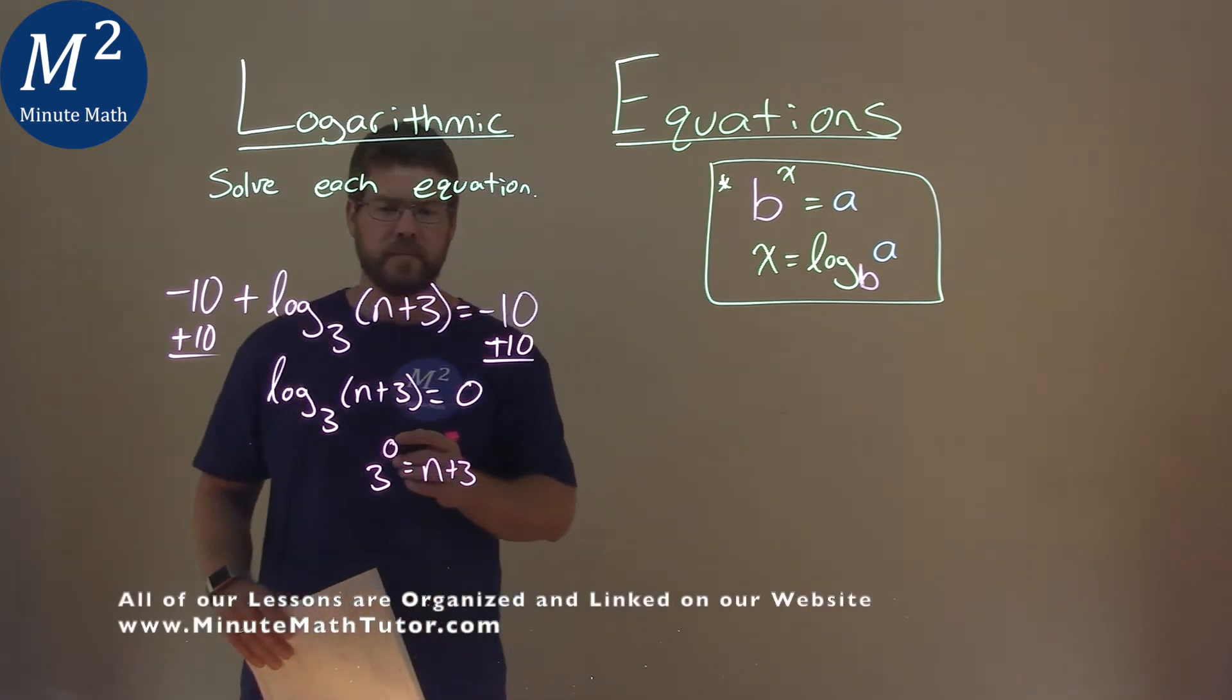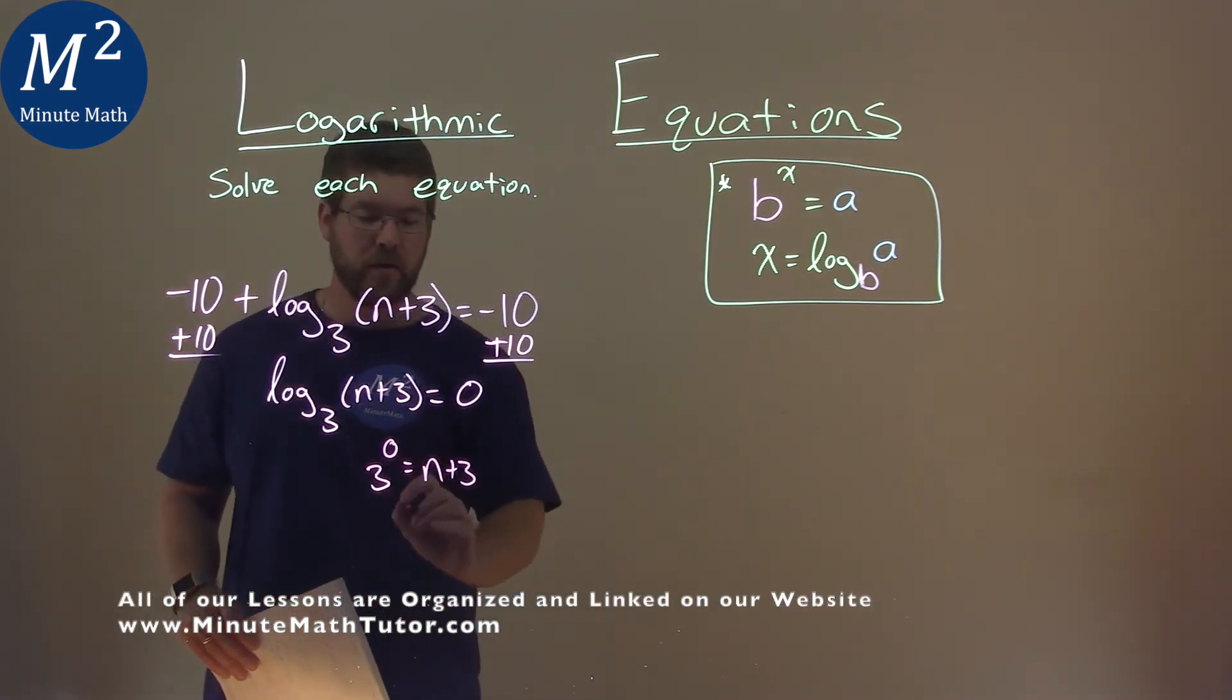This actually isn't too bad to solve now. We have 3 to the 0 power, which is 1, and we have n plus 3 here.